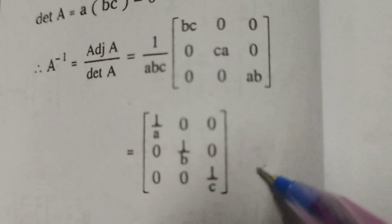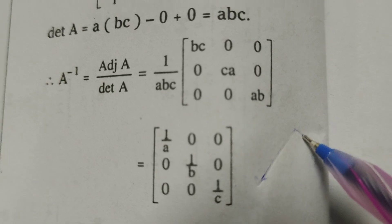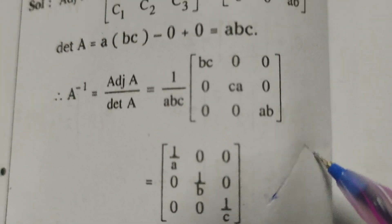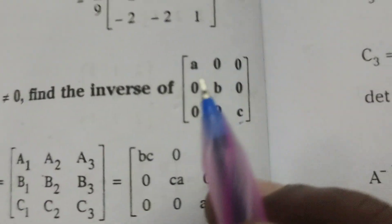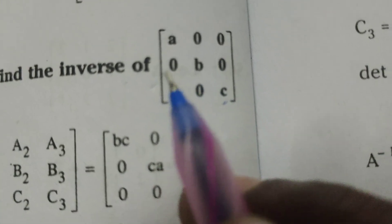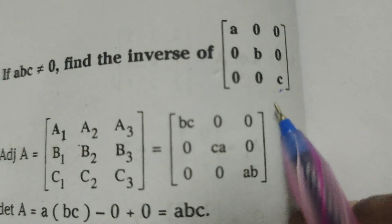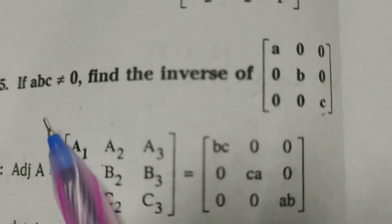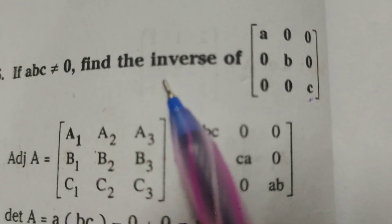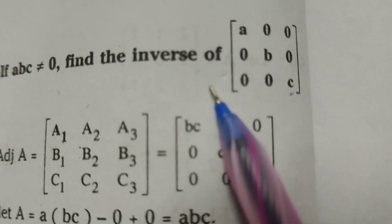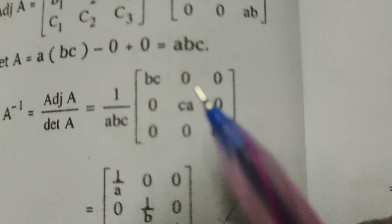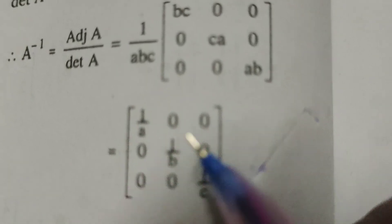This is the solution of A inverse for the given matrix a 0 0, 0 b 0, 0 0 c. If abc not equals to 0, we find the inverse of this matrix. We will get here 1 by a, 0, 0, 0, 1 by b, 0, 0, 0, 1 by c. Okay, thank you.